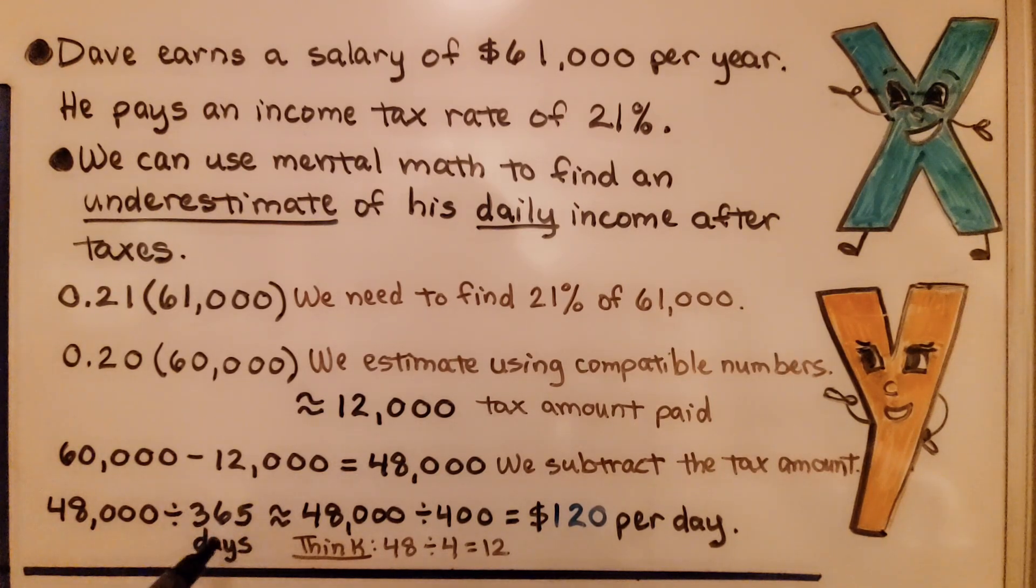Instead of doing the 365, we can round this to 400 and say 48,000 divided by 400. And we can think, well, what's 48 divided by 4? We have a 48 and a 4 here. Well, that would be 12. And because this only has two zeros, that has three zeros. We're going to have to put a zero on the back of our 12. We're going to get $120 per day. We can do it with mental math.